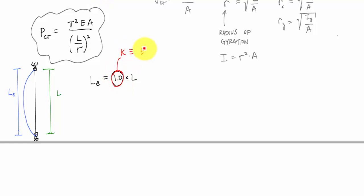This K is called the effective length factor. It gives you a sense of how much of the length of the column will actually buckle. And for a pin-pin column, K equals one.